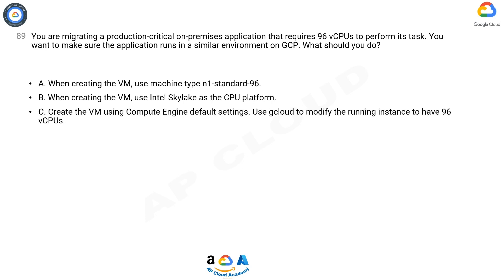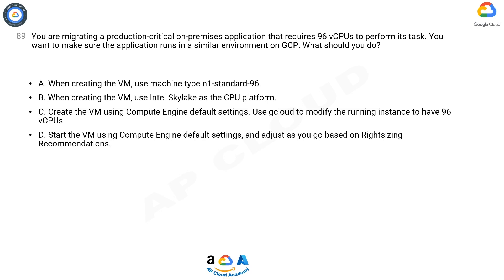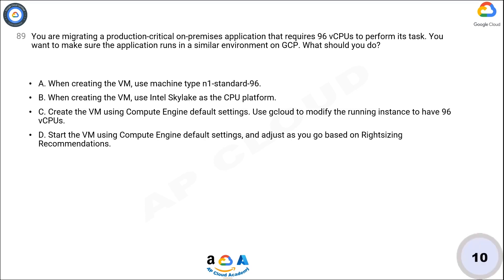C. Create the VM using Compute Engine default settings. Use Cloud to modify the running instance to have 96 vCPUs. D. Start the VM using Compute Engine default settings and adjust as you go based on right-sizing recommendations.